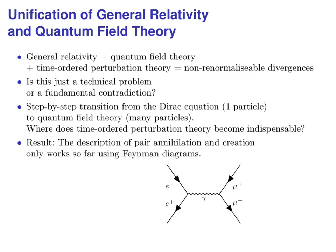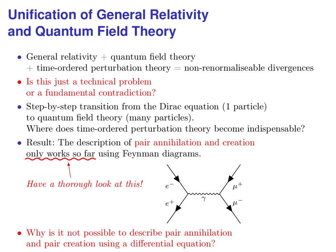Using Feynman diagrams, we can, broadly speaking, let the antiparticles travel against the direction of the arrows. The description of pair annihilation and creation, however, only works so far using Feynman diagrams. But what does that mean, only works so far? Again, this leads me to the question, is this just a calculation method which does not work? Isn't there a fundamental mathematical contradiction between both theories? So, my research question, my question about the question, reads: why is it not possible to describe pair annihilation and pair creation using a differential equation?